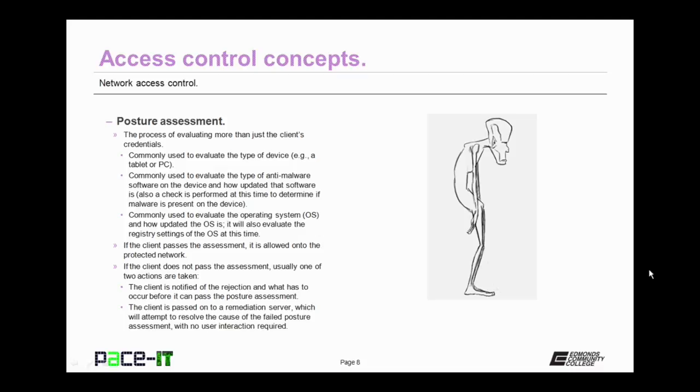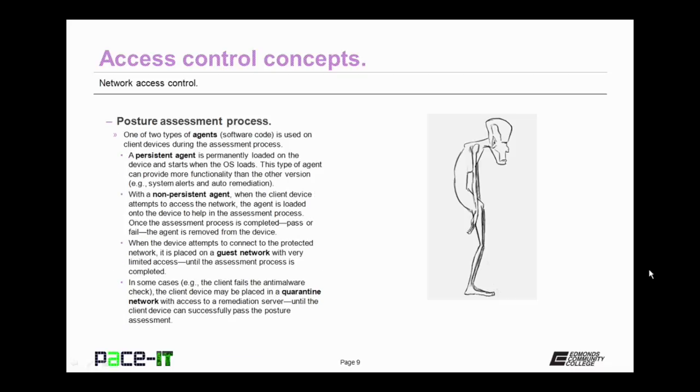The first action could be that the client is notified of the rejection and what has to occur before it can pass the posture assessment. Does it need an operating system update? Does it need anti-malware installed? So on and so forth. The other action that is commonly taken when a device has failed the posture assessment is that it is passed on to a remediation server, which will then attempt to resolve the cause of the failed posture assessment. It will do this with no user interaction required. Once it has remediated the device and it can pass the assessment, it then goes through the process again and is allowed onto the network if it passes.